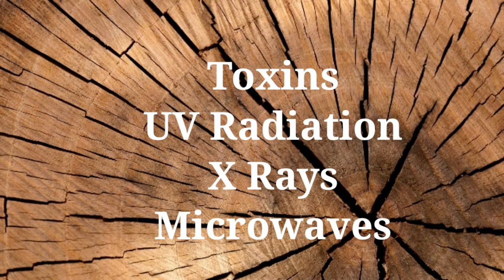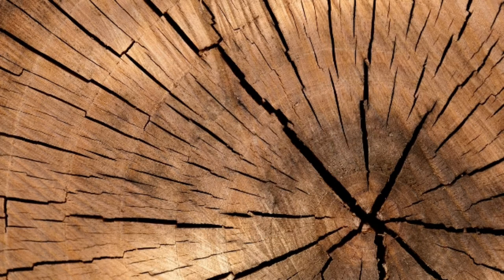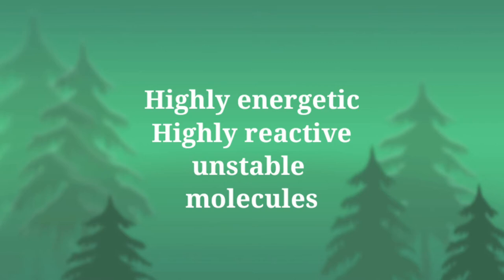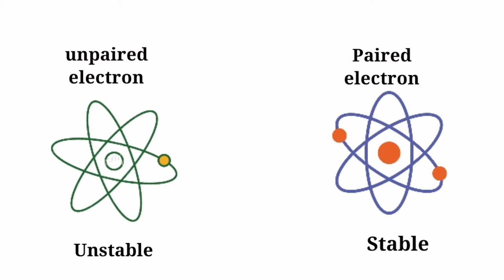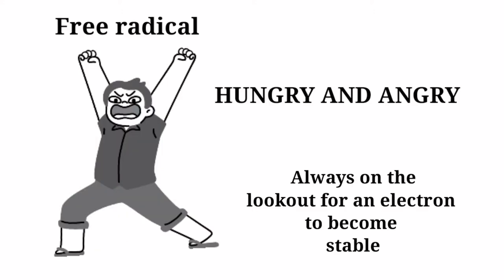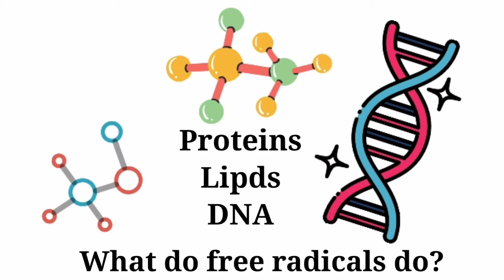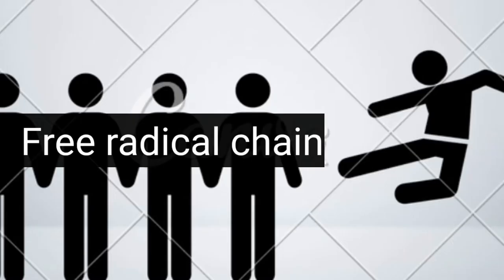These free radicals are highly energetic, reactive, and unstable molecules. They are unstable and energetic because they have an unpaired electron in their outer orbit. We can describe free radicals as hungry and angry molecules, because in order to become stable they are always on the lookout for electrons from stable molecules. They knock off an electron from cell molecules like proteins, lipids, and DNA. After losing an electron, these molecules now become free radicals themselves, setting off a chain reaction leading to the formation of many more free radicals.